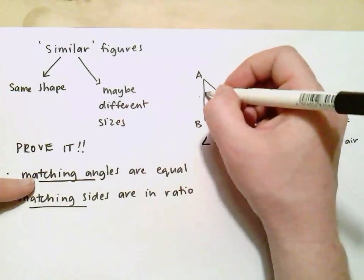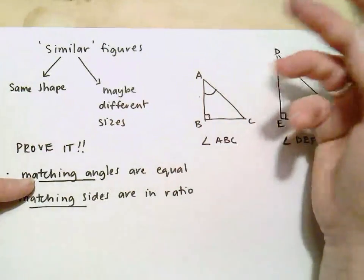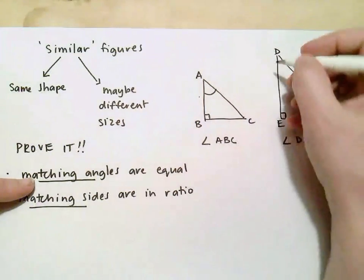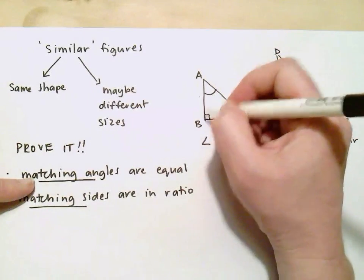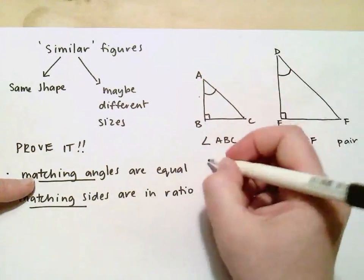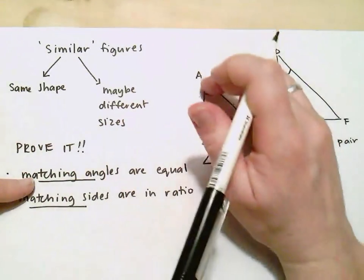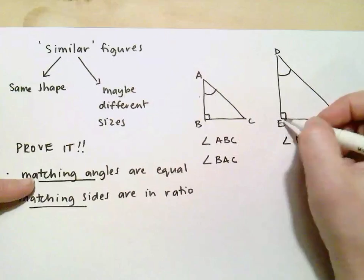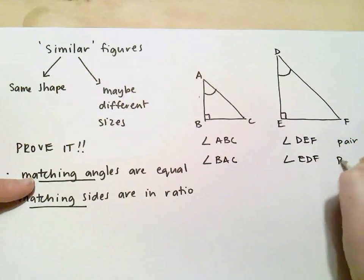Then I'd have to say to myself, well now I'm looking at this angle. And what's the matching angle in this particular triangle? Well for this one it looks like it's this angle here. So I'd be saying to myself BAC. So angle BAC. Notice that the vertice is always the middle letter. And angle EDF, well they form a pair as well.